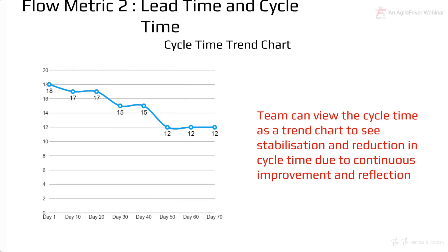Another way to visualize cycle time is the cycle time trend chart. If you're working with items of varying sizes, the trend chart would be very erratic — and that gives you a good sense of what's going wrong. But if you have a rock-solid process with cycle time collection and tracking in place, the trend should technically be on a downward spiral because you are continuously making improvements, looking at the data, and making more changes.